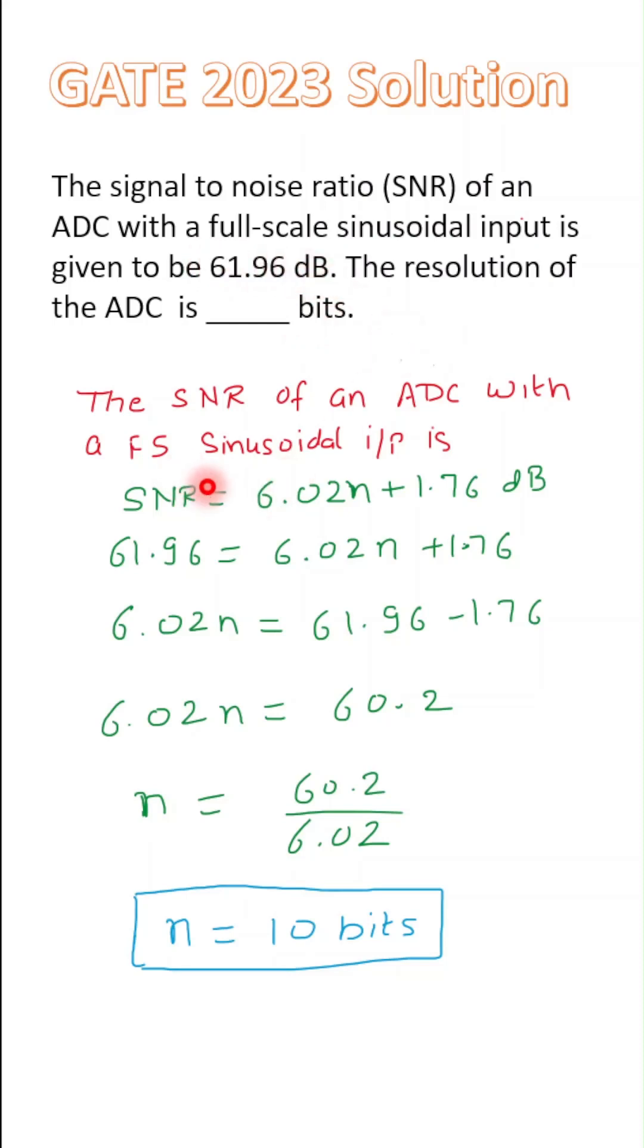So this is a very simple formula-based problem. The SNR formula is 6.02n + 1.76 dB. The SNR I am going to directly substitute is given in dB, that is 61.96.